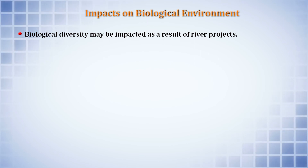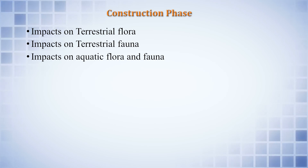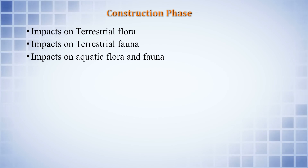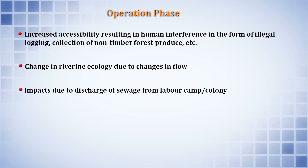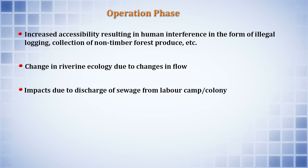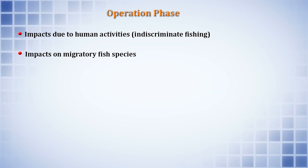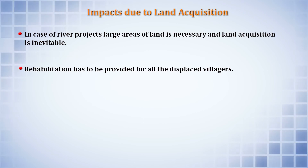Biological diversity may also be impacted due to river projects, with effects on terrestrial flora, terrestrial fauna, and both aquatic flora and fauna. During the operation phase, there can be illegal logging, human interference in collection of non-timber forest produce, and changes in riverine ecology due to altered flow patterns. Additional impacts include discharge of sewage from labour camps and colonies, impacts on migratory fish species, and effects due to land acquisition requiring rehabilitation of displaced villagers.